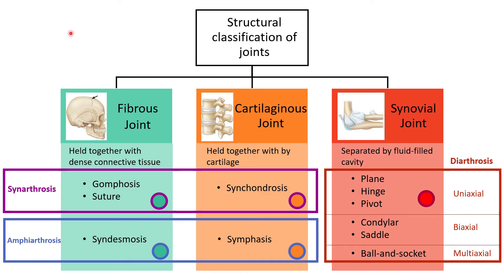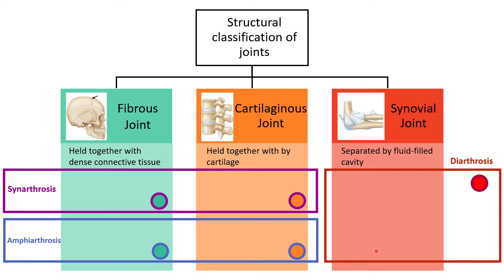As we go through the articulations of the axial skeleton, keep in mind the organizational figure showing the structural classification of joints. There are three types of fibrous joints — two synarthroses and one amphiarthrosis — two types of cartilaginous joints, one synarthrosis and one amphiarthrosis, and then the various types of synovial joints, all of which are diarthrotic. In the figures, red indicates synovial, orange is cartilaginous, green is fibrous, purple outline indicates synarthrotic, and blue outline indicates amphiarthrotic.